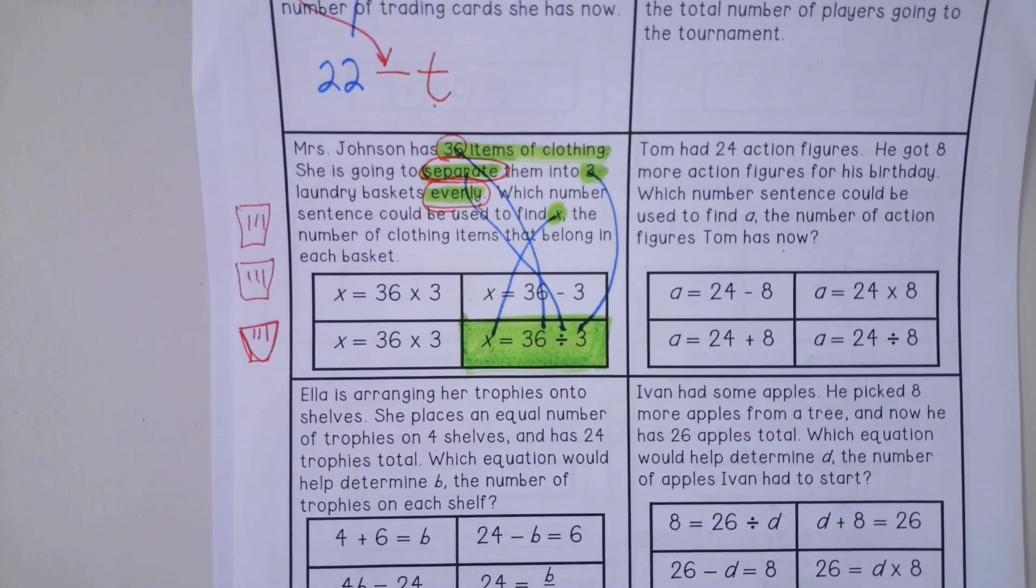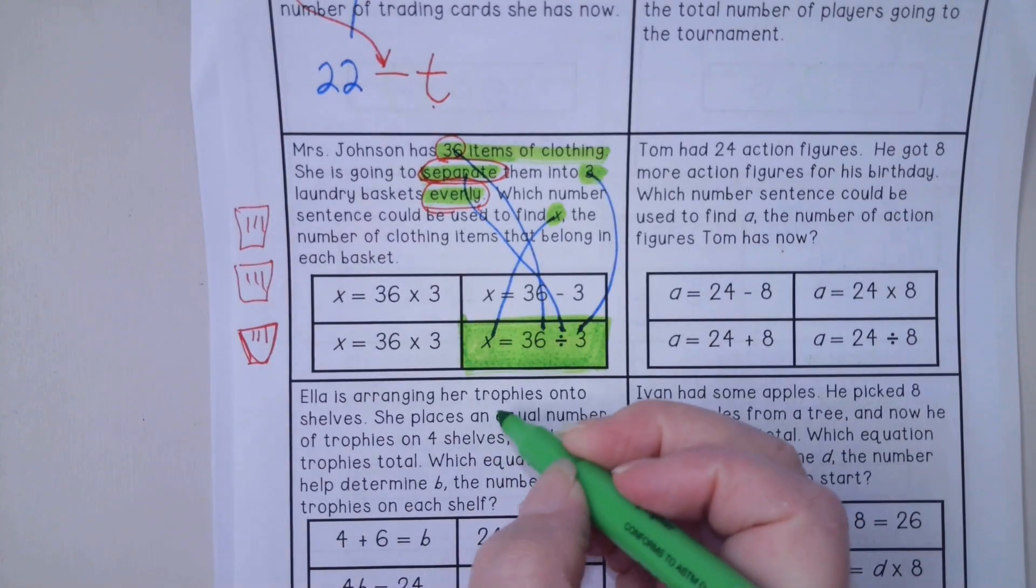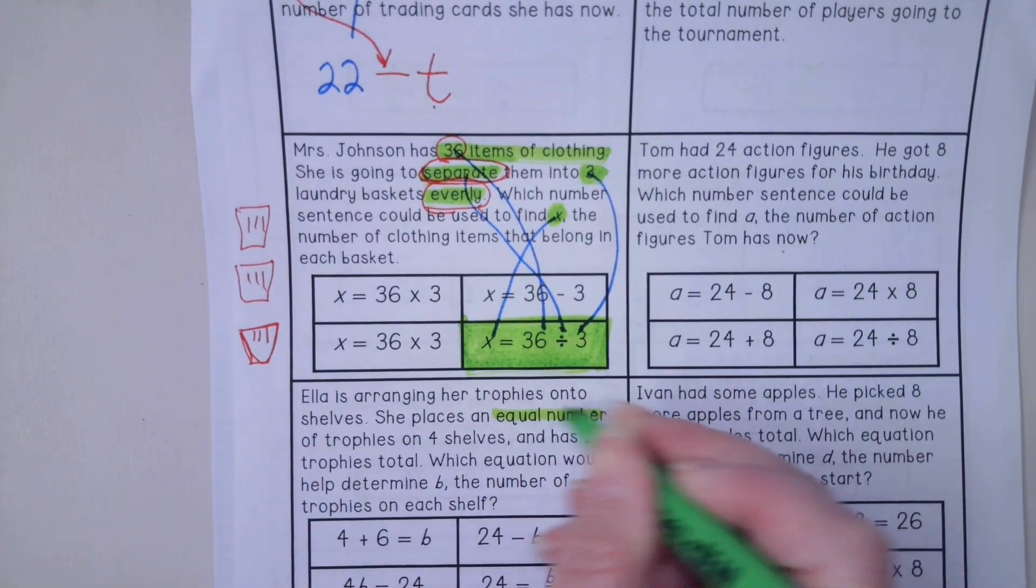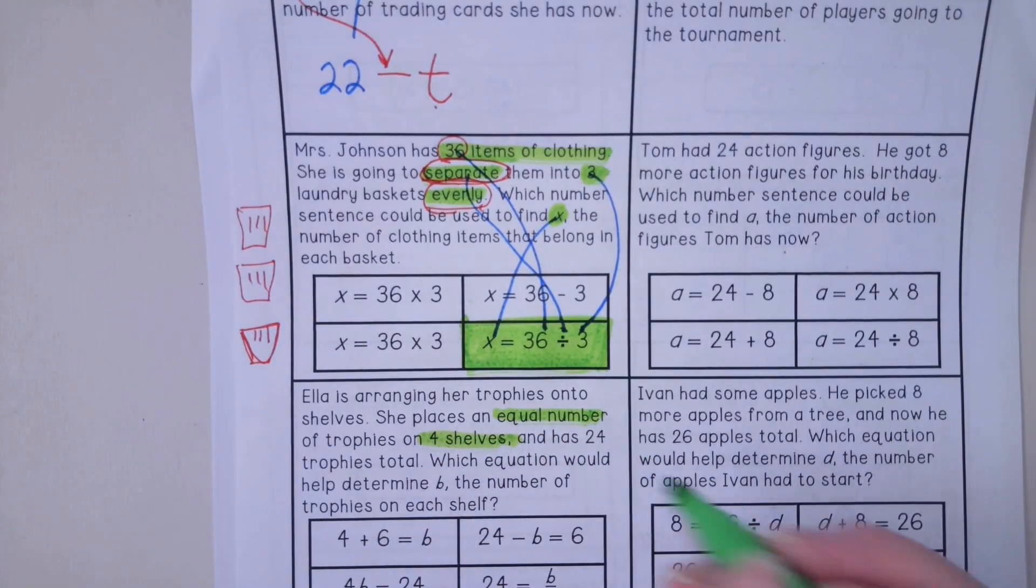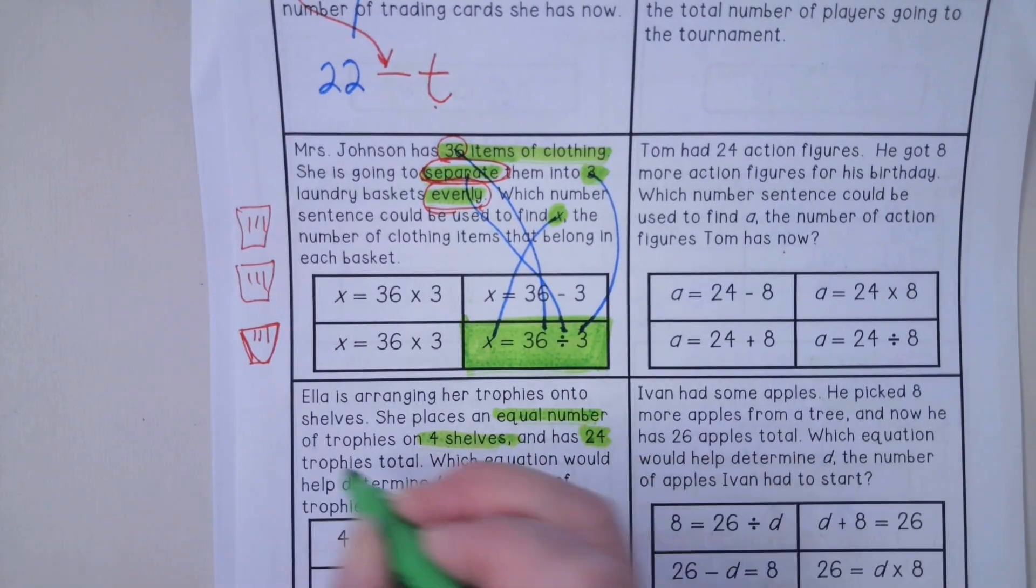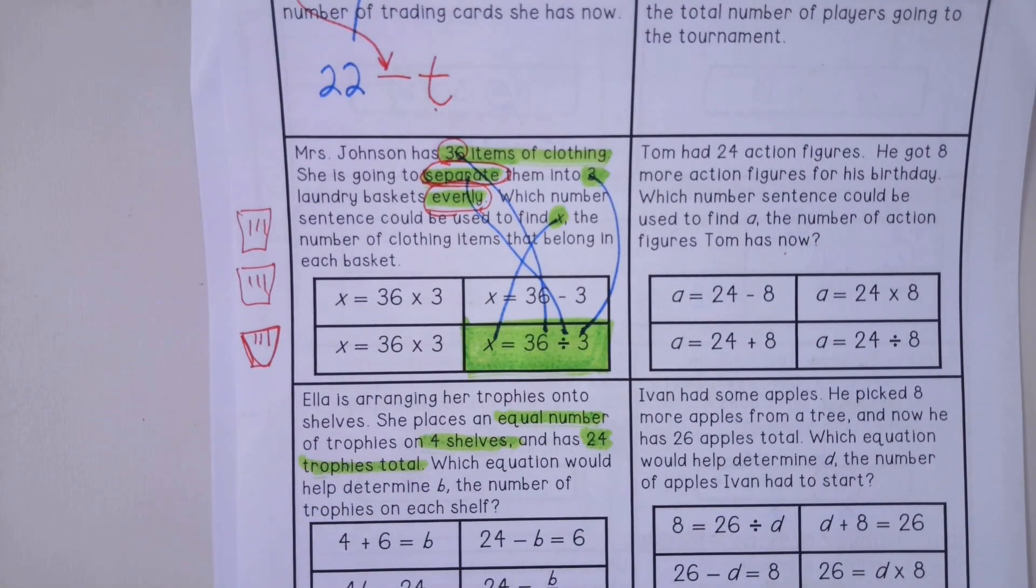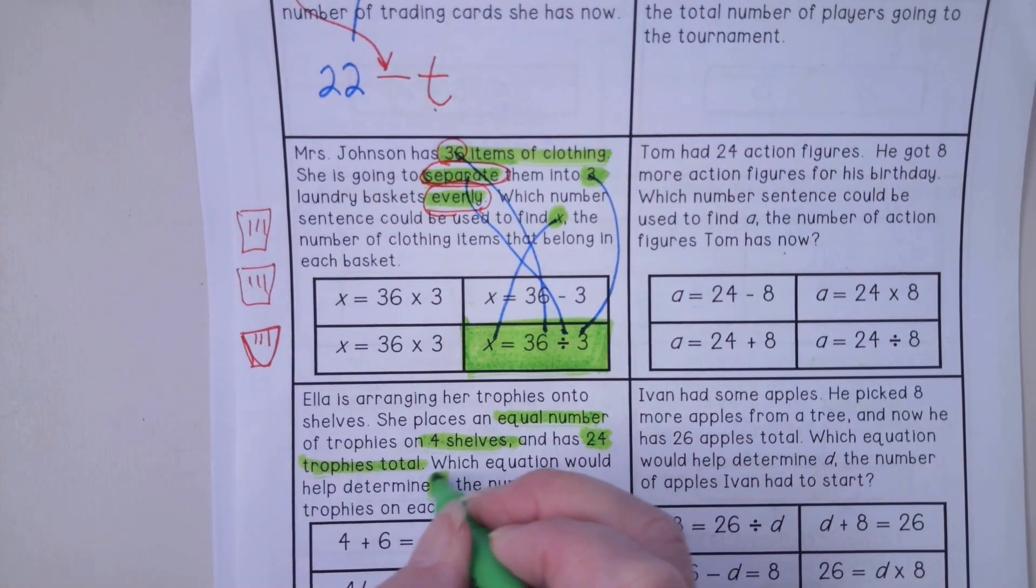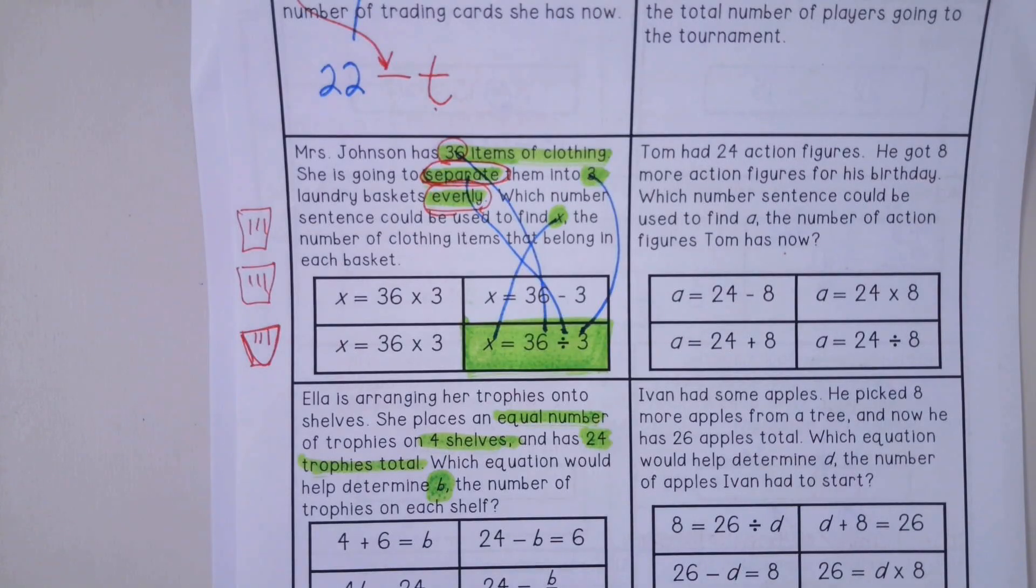I'm going to read the next one. It says, Ella is arranging her trophies onto shelves. She places an equal number. That gives us a hint. An equal number of trophies on four shelves. She has 24 trophies total. What equation would help determine the variable b, the number of trophies on the shelf?